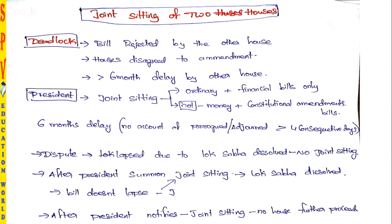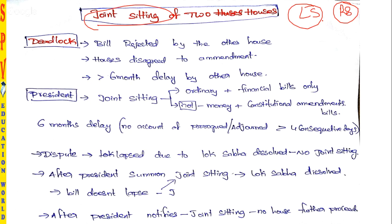Joint sitting of two houses — joint sitting means the two houses, Lok Sabha and Rajya Sabha, sit together and pass a bill. Why do they want to sit together and pass the bill? It is because there is a deadlock between them. To solve that, they must sit together and solve it. That situation is called a deadlock.